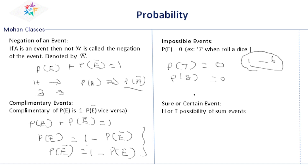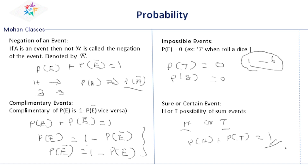What is called a sure or certain event? Very simple. If you are tossing a coin, you may get either head or tail. So this is called a sure event. The sure event will always be 1. P of head plus P of tail is always equal to 1. The sum of all events will always be 1. This is called a sure event, and the probability of a sure event is equal to 1.